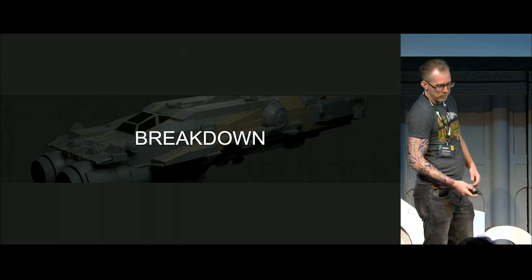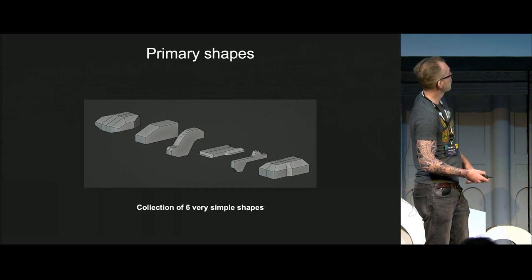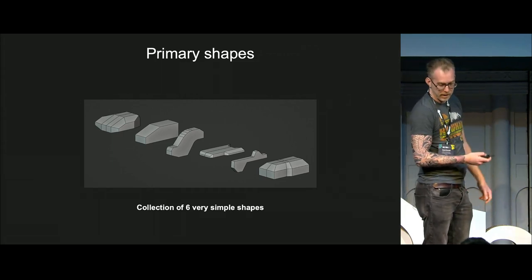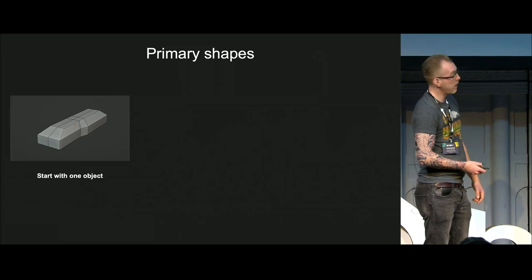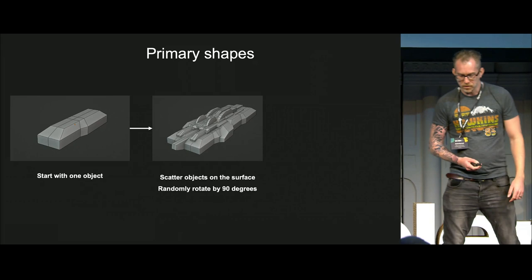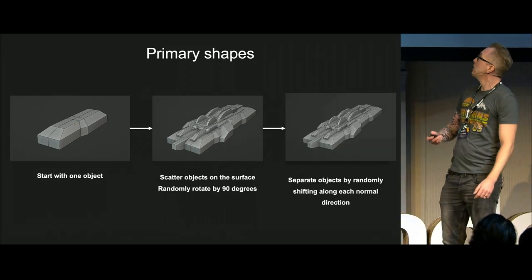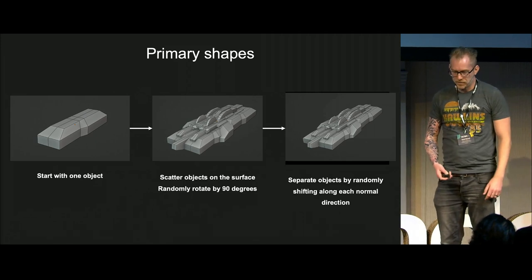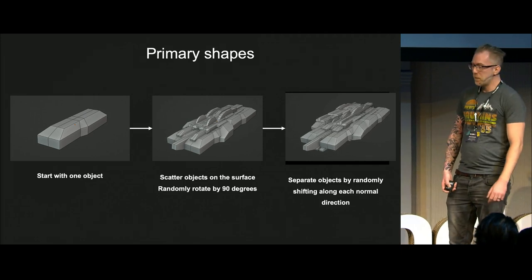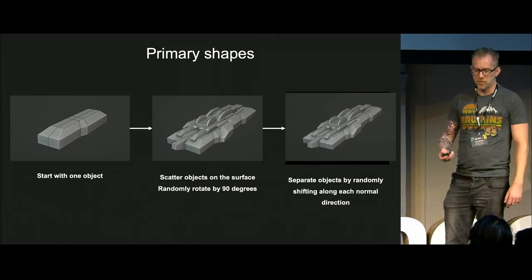Breakdown. The primary shapes are made of a collection of six super simple shapes, and these can be replaced at any time. I start with one object, then scatter other objects on top of that and randomly rotate them in the Y axis. And then I have this separation value thing — basically a separation value to create more complex shapes.